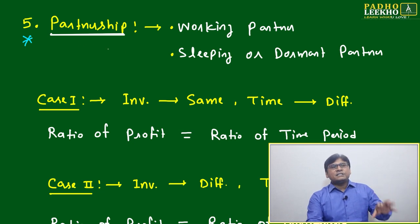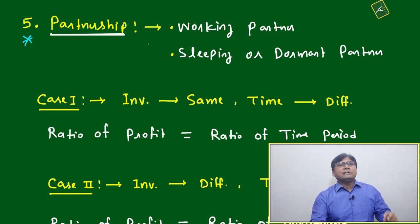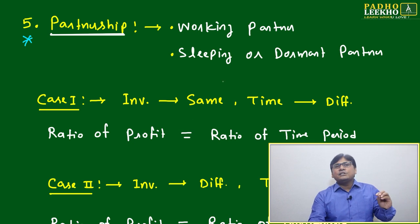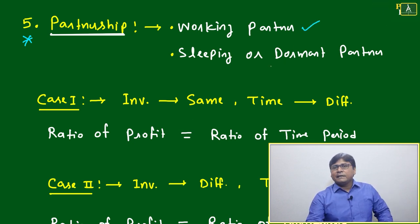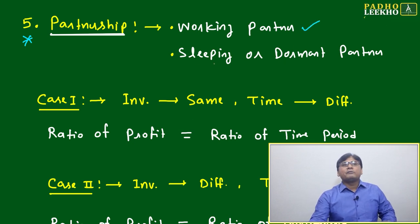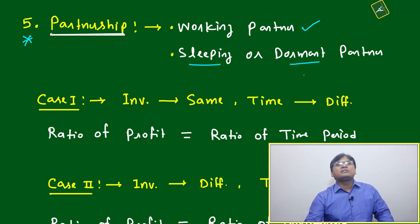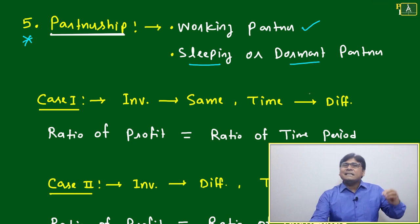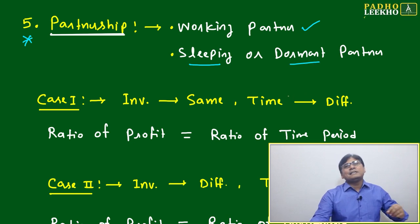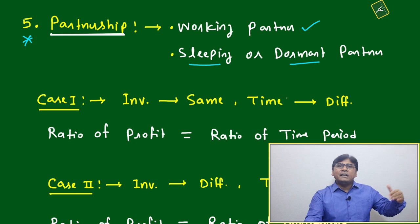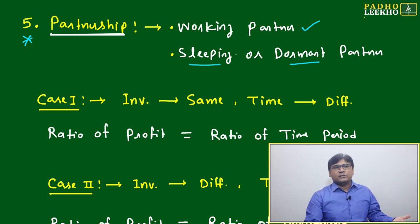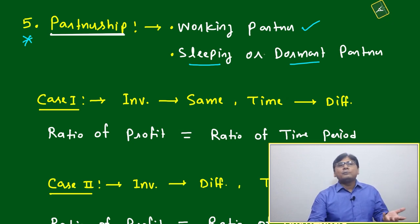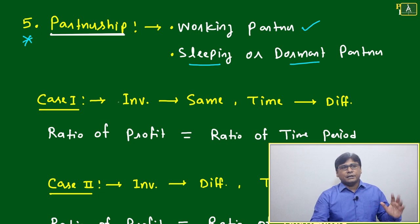We will focus for a few minutes on partnership. What is partnership? Two or more persons jointly doing some business. One type of partner is called a working partner, who is very active. Another type is called a sleeping or dormant partner — he has given the money but is not able to put in time, or maybe he is physically not available at the business location.